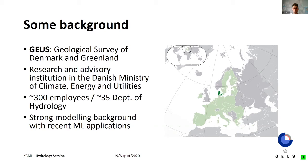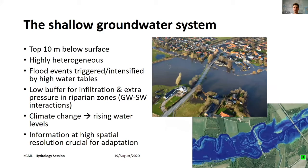Just some background. We have around 300 people working here, with 35 in the Department of Hydrology. We have a very strong modeling background using process-based models and recent machine learning applications. I've included a map of Europe highlighting Denmark because we're going to show a lot of maps of Denmark — just to make sure everyone knows where we are.